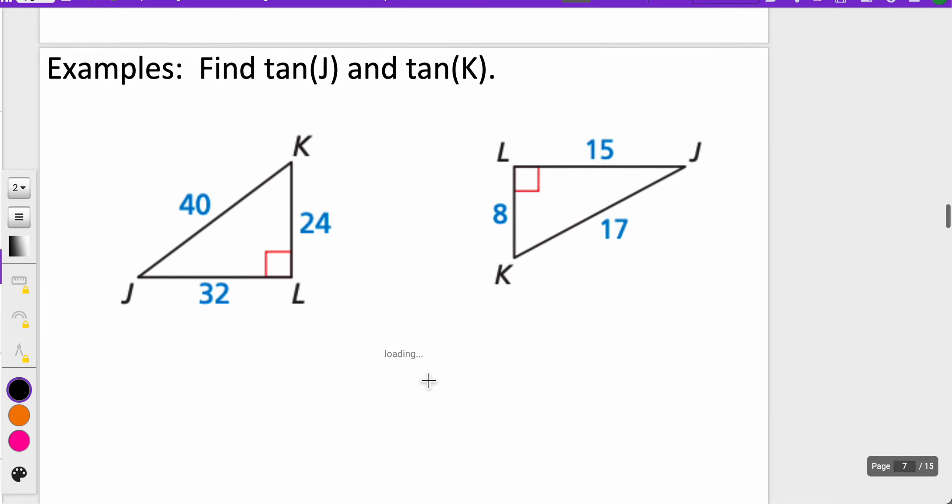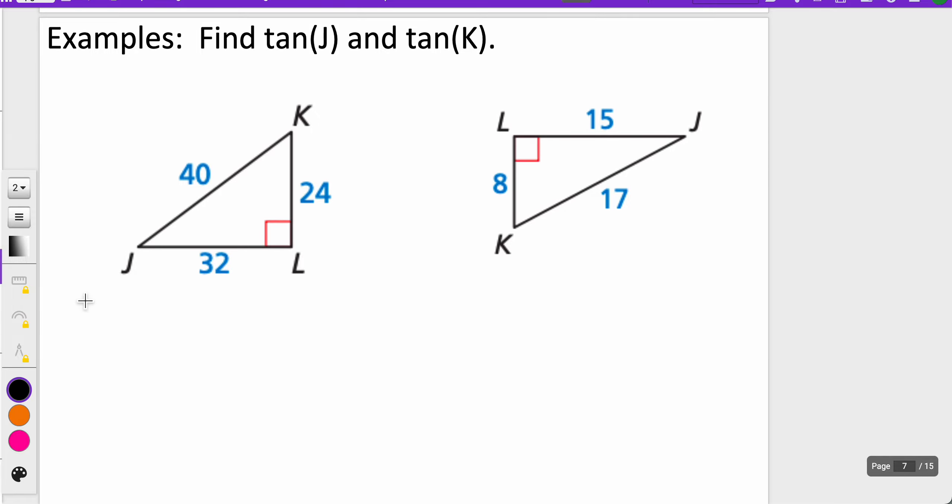We're going to find the tangent of J and K for each of these. We always want to start by labeling our answer like this: tangent of J and tangent of K. Our main goal is to simplify the ratio and get it in a simplified fraction form. The tangent of J means I want to do opposite over adjacent. So opposite is 24 and adjacent is 32. 24 over 32 has 8 in common, so I'm going to reduce both by 8 and get 3 over 4.